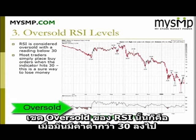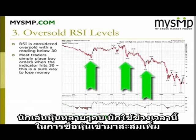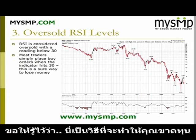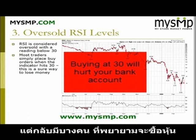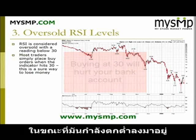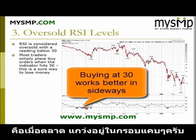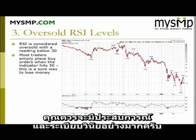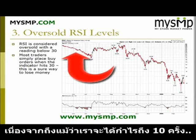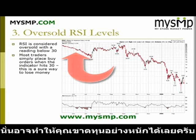Oversold readings on the RSI are considered to be anything below 30. Many traders will use this as an opportunity to add to long positions. Please note that this is a sure way to lose money. Since the RSI is a measure of the strength of a security, why would someone attempt to purchase a security when it is down on its luck? The only time a counter strategy will work is in a sideways market. However, to trade this type of formation takes enormous experience and discipline, because even if a trader is right 10 times in a row, it only takes one trending move in the wrong direction to break an account.